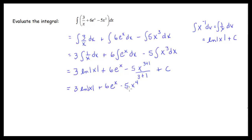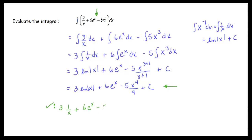Simplifying: the exponent becomes 4, so the last term is minus 5x to the 4th divided by 4, plus c. To verify, the derivative of 3 natural log of x is 3 times 1 over x. The derivative of 6e to the x is 6e to the x. For the last term, the derivative gives 5 times 4x cubed over 4 — the 4s cancel, leaving 5x cubed. So 3 over x, 6e to the x, and 5x cubed all match our original integrand.